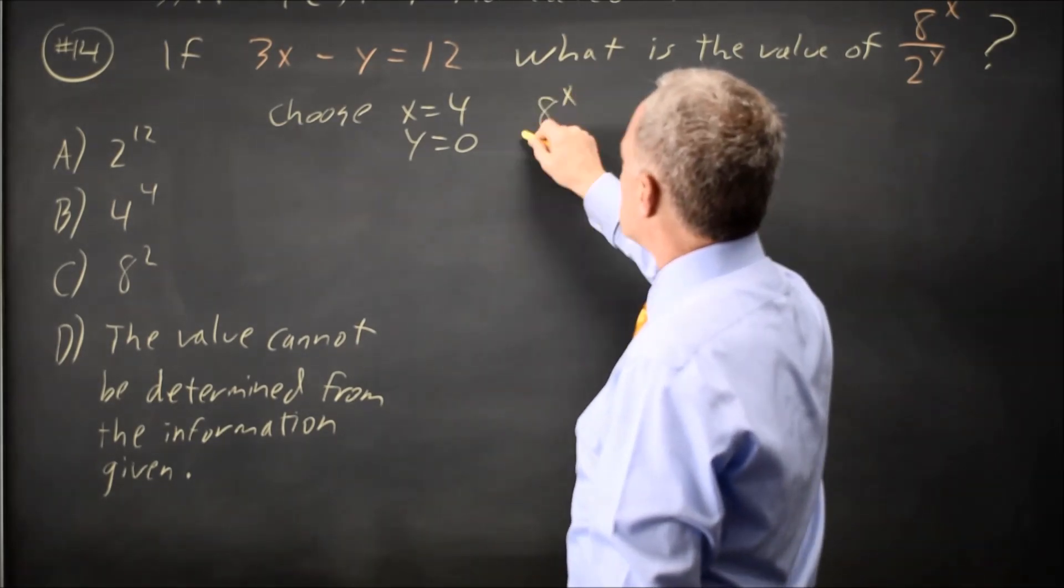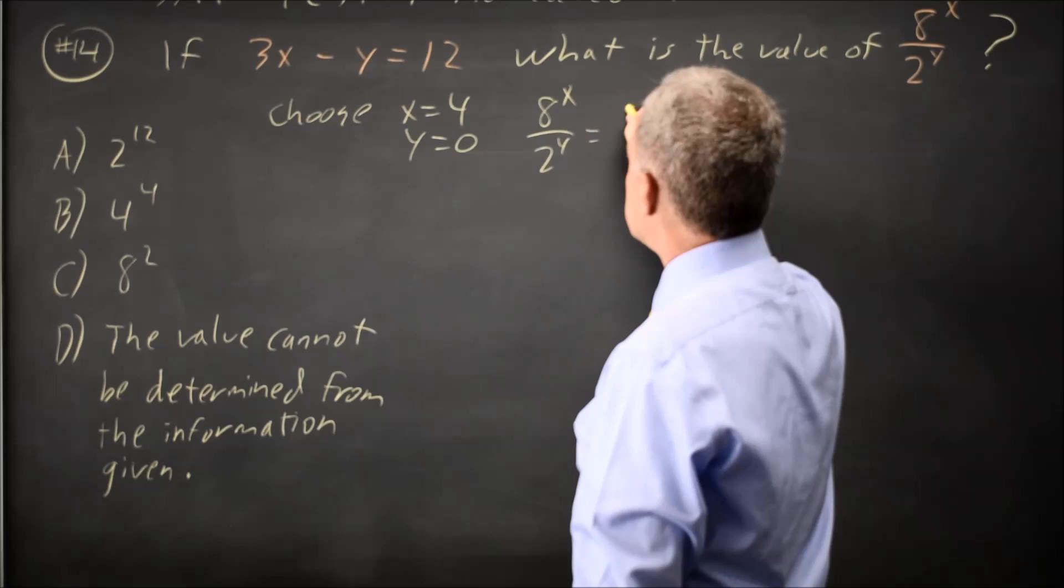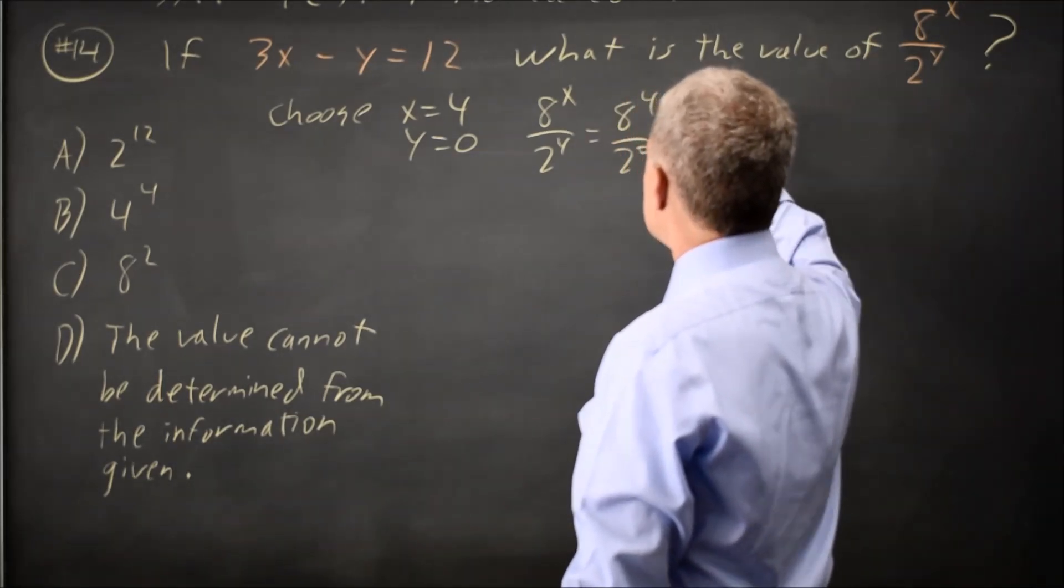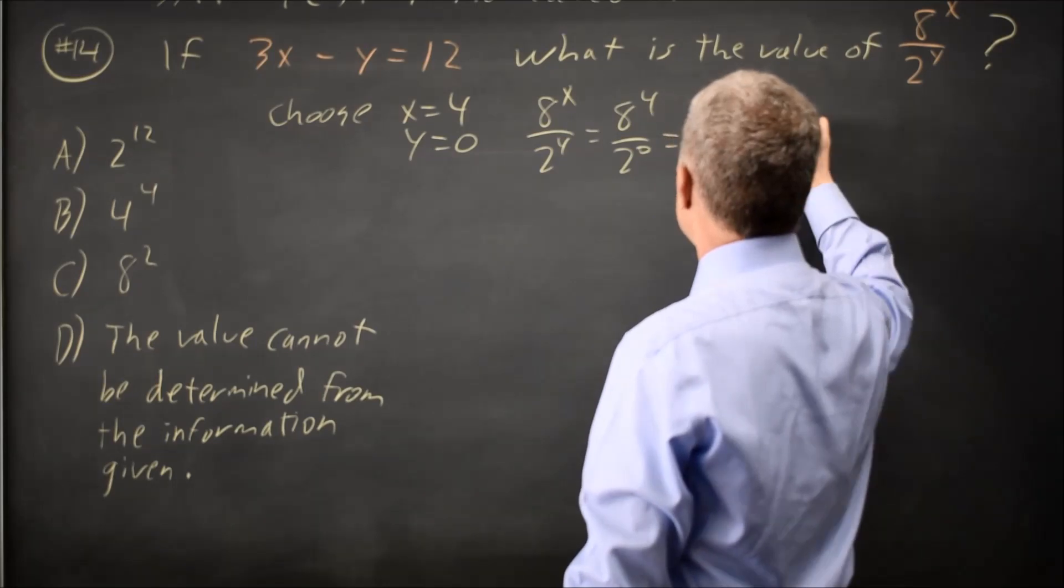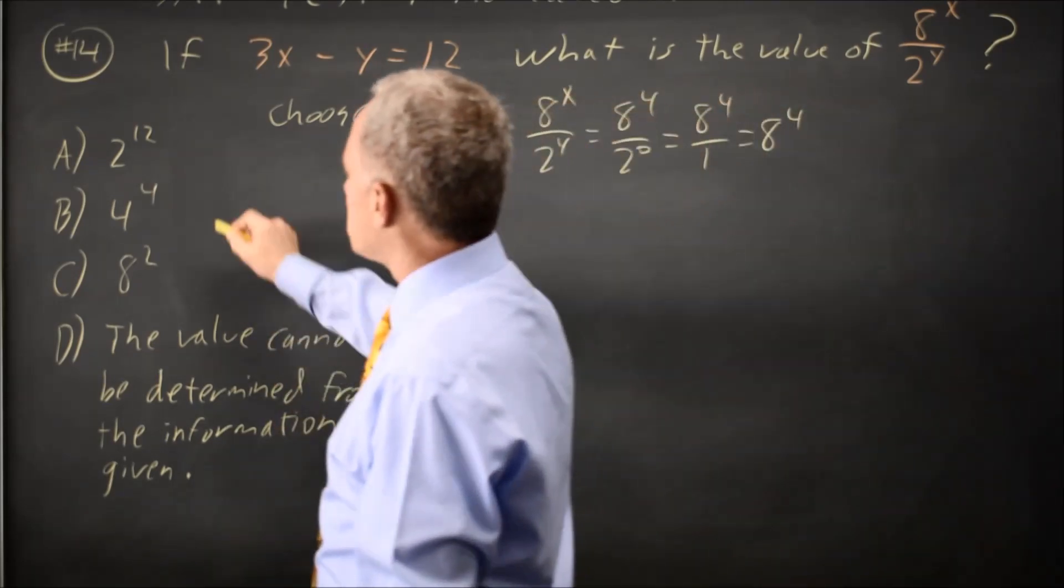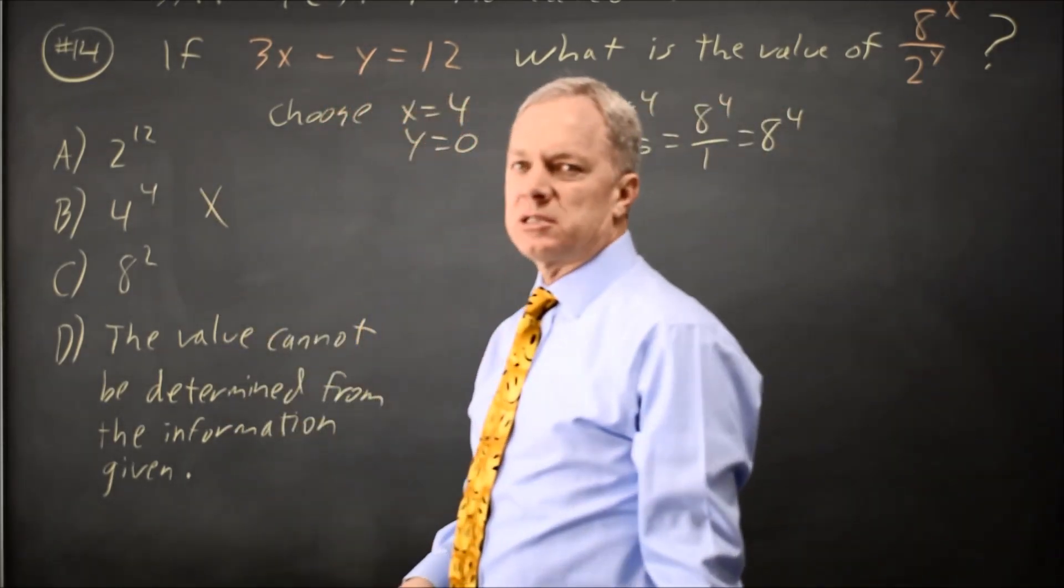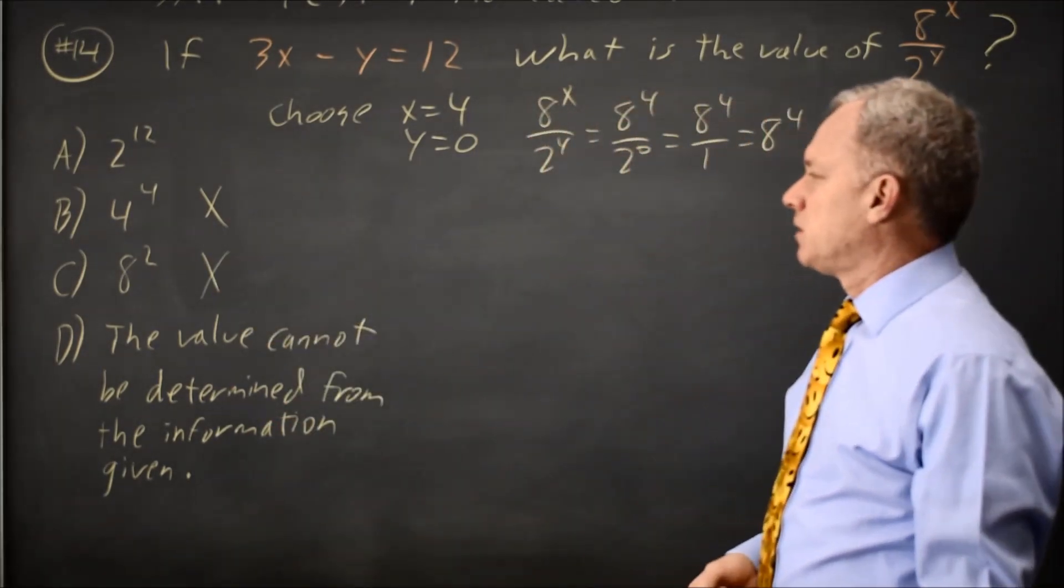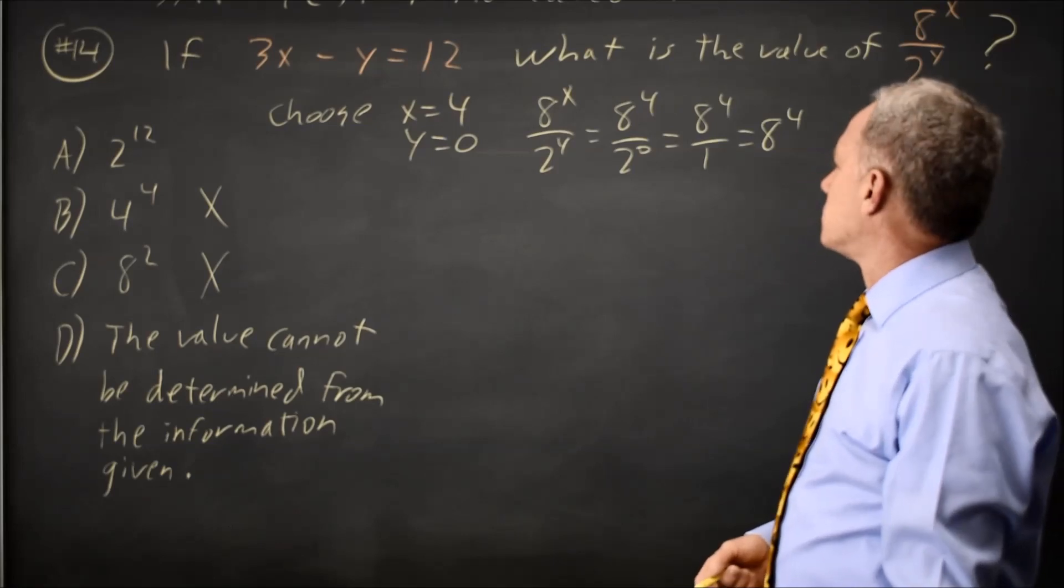Then 8 to the x over 2 to the y is 8 to the 4 over 2 to the 0, and 2 to the 0 is 1, so that's 8 to the 4 over 1, which is 8 to the 4. 8 to the 4 is not 4 to the 4 because our base is larger and we have the same exponent. It's not 8 squared because it's 8 squared squared, which is much larger.